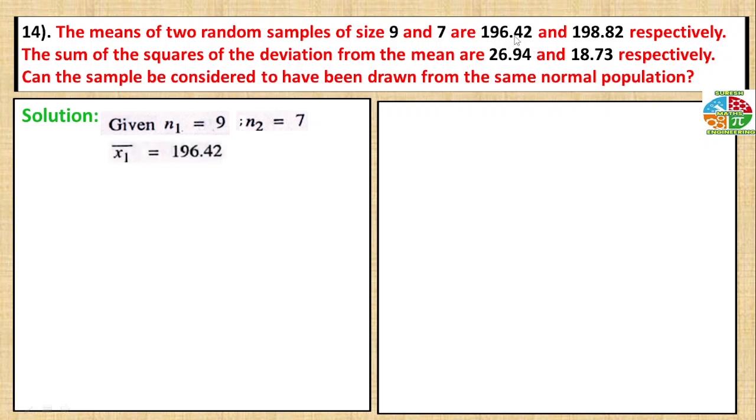Mean of the first sample, x1 bar equals 196.42, second sample mean x2 bar equals 198.82. Sum of the squares of deviation from the first mean is equal to 26.94.